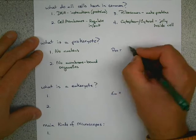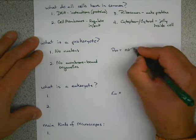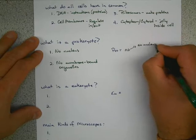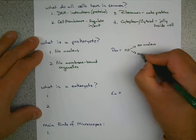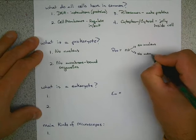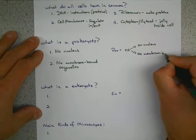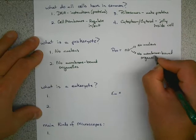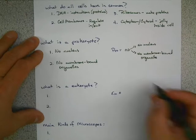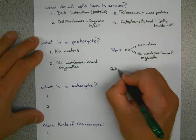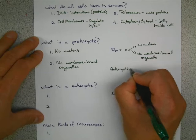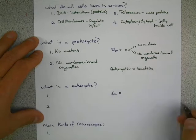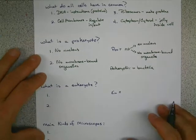So what you want to remember, and this is a really simple way to remember it, is pro means no. And what we mean by no is no nucleus and no organelles, no membrane-bound organelles. Now anything that is prokaryotic is known as a bacteria. So prokaryotic cells equal bacteria.